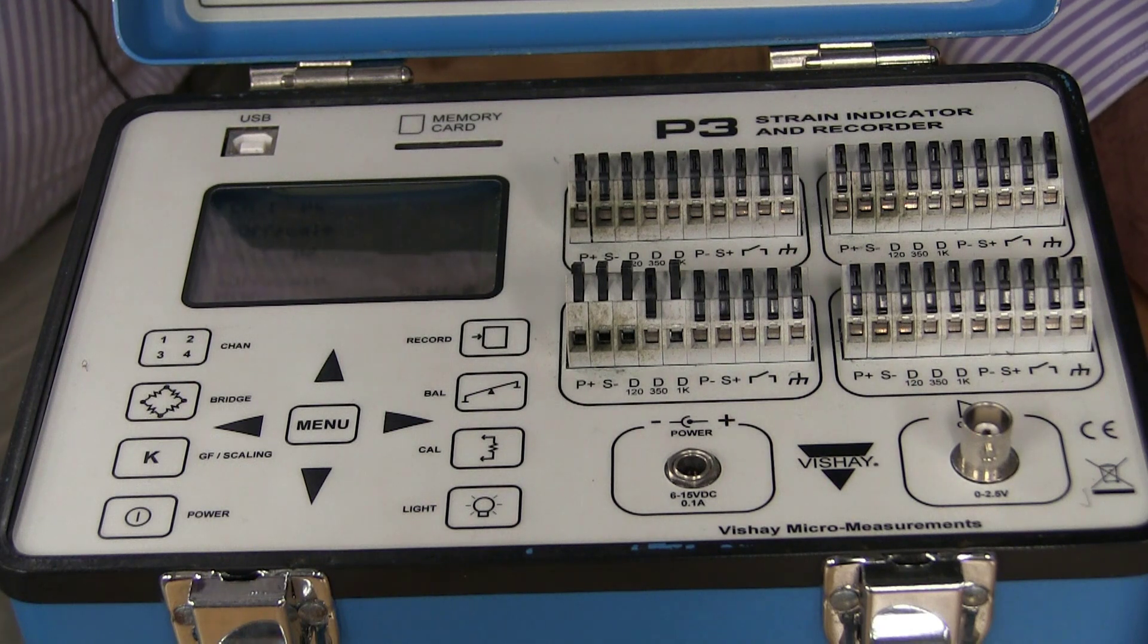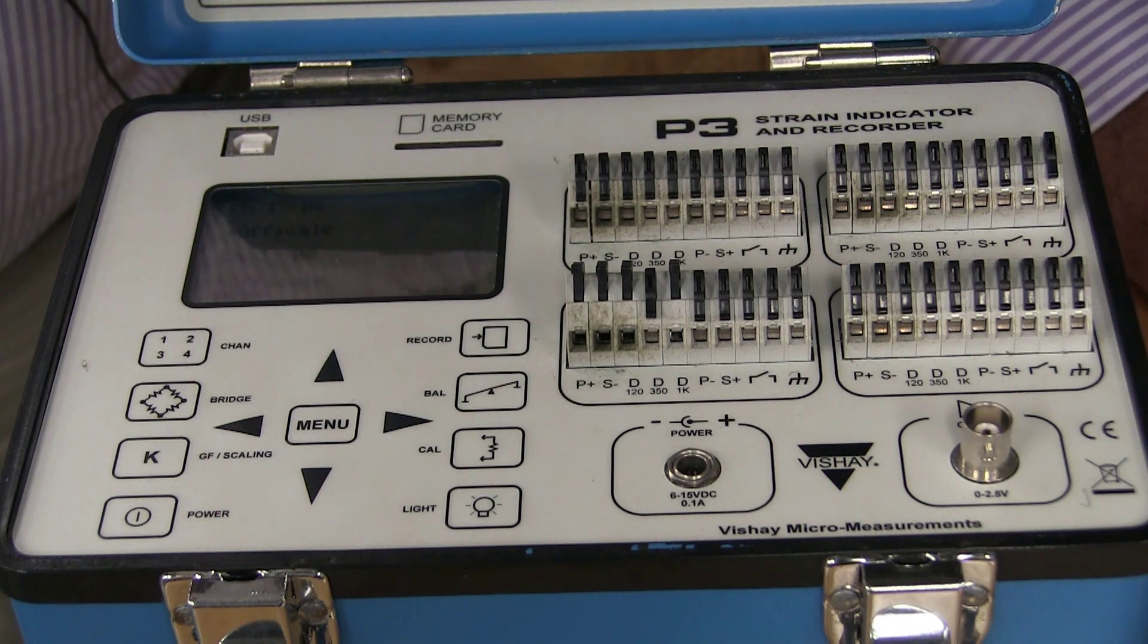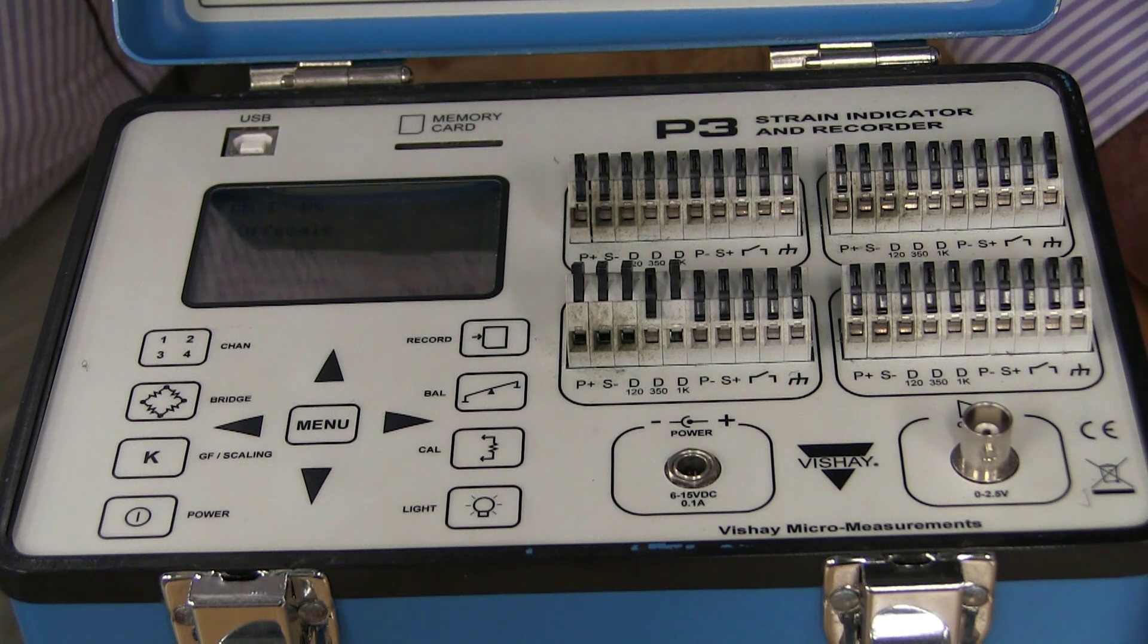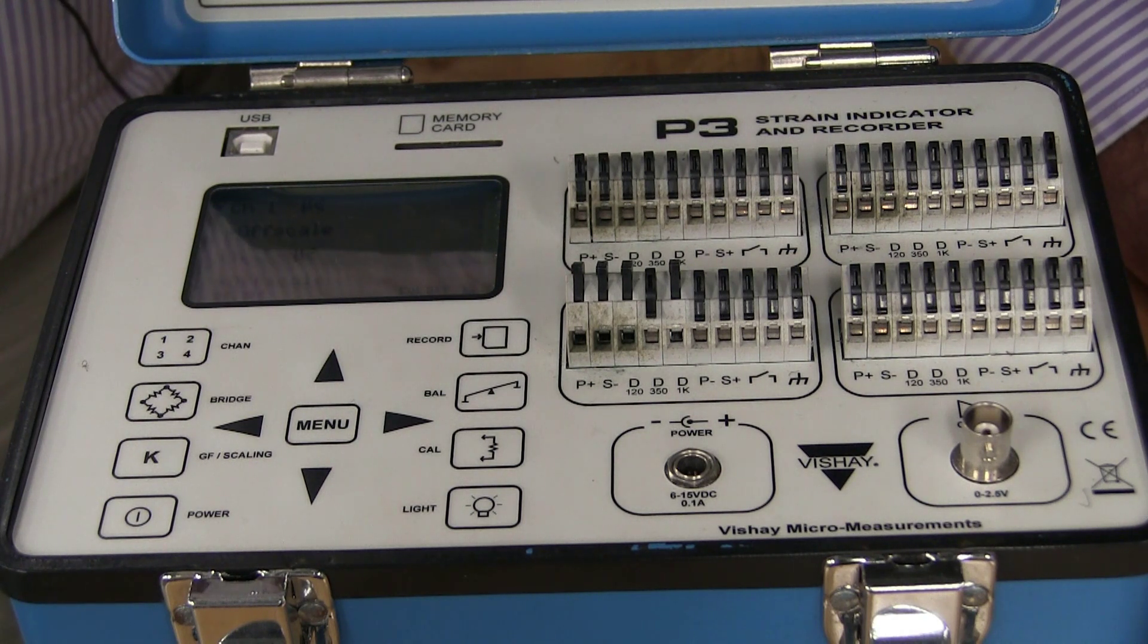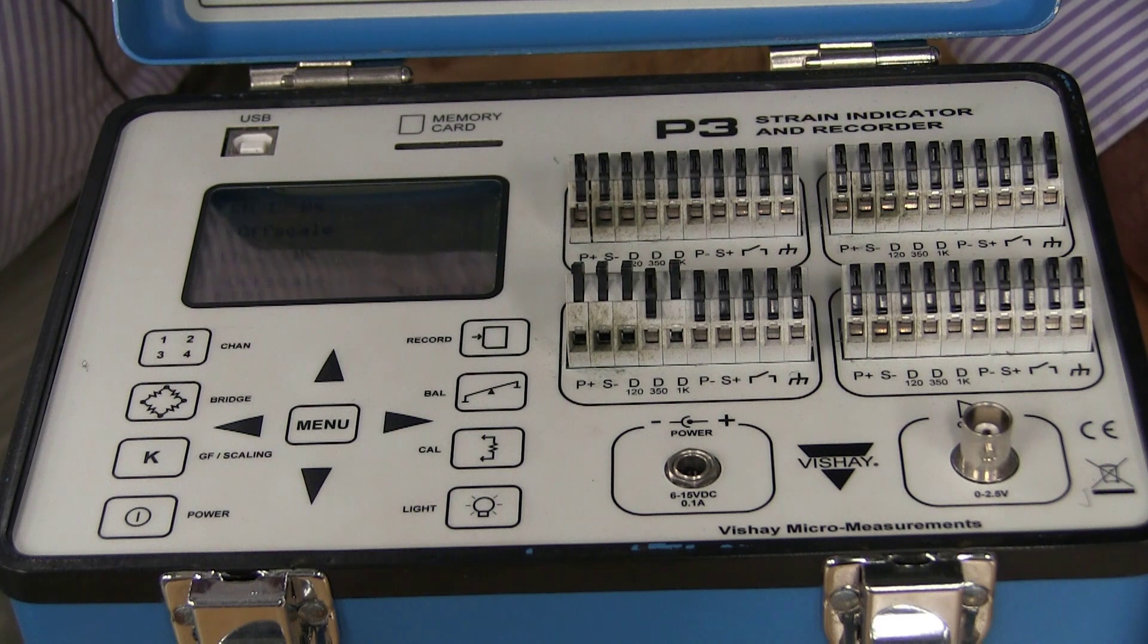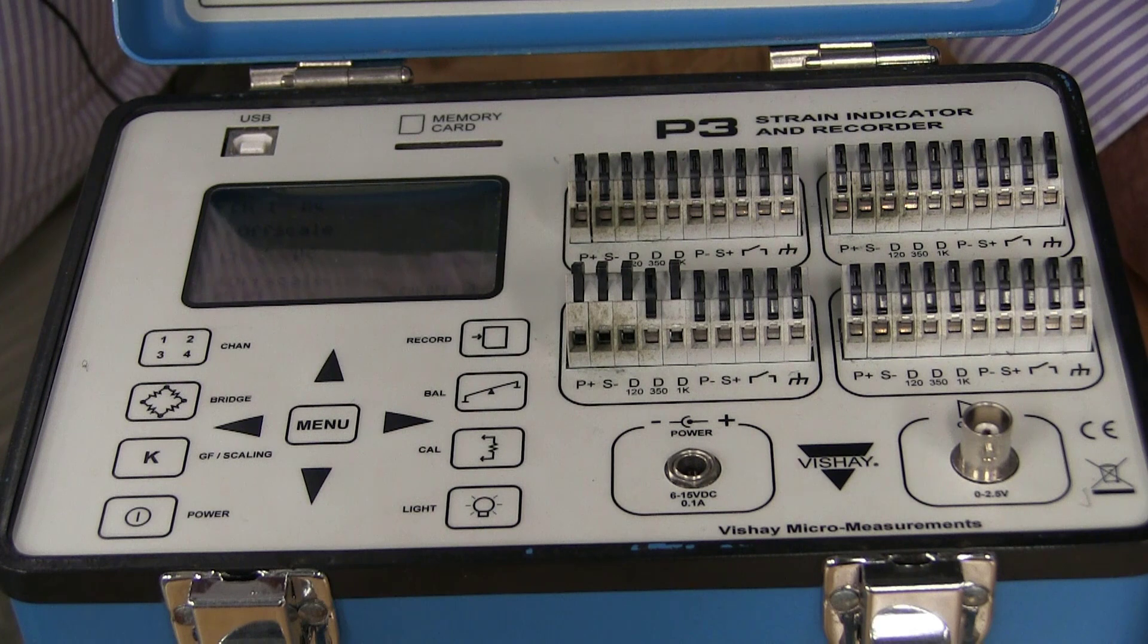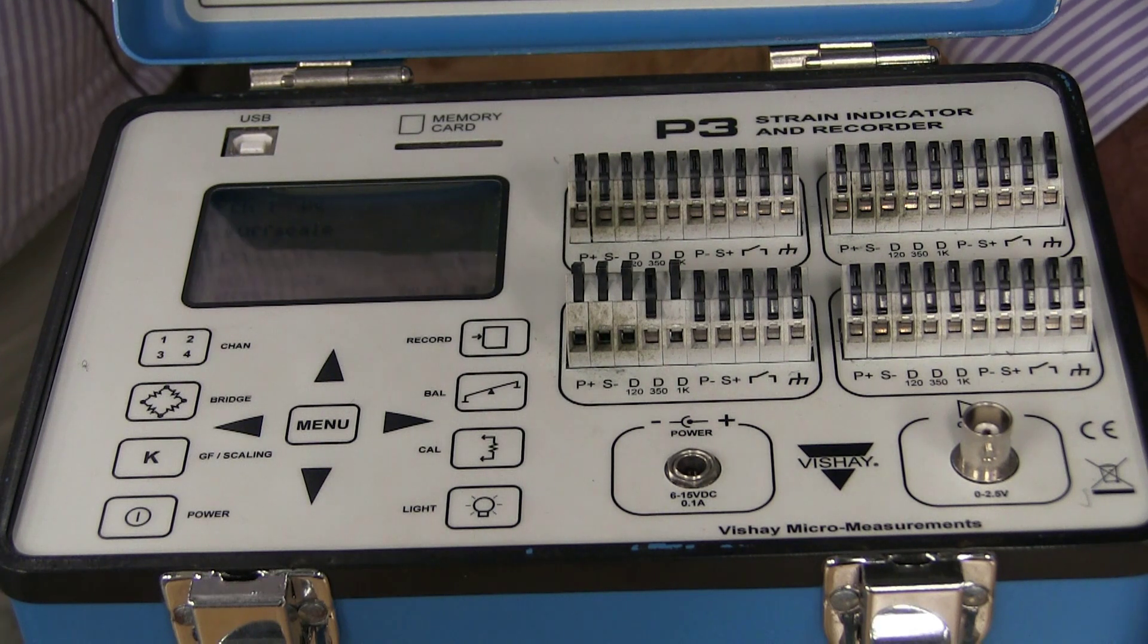I'm going to have four channels, which is what we need since we have three different measurements that we want to make simultaneously, and it fully compensates for the type of bridge that you have automatically, so you don't have to manually divide by two or divide by four if you have a half bridge or a full bridge.